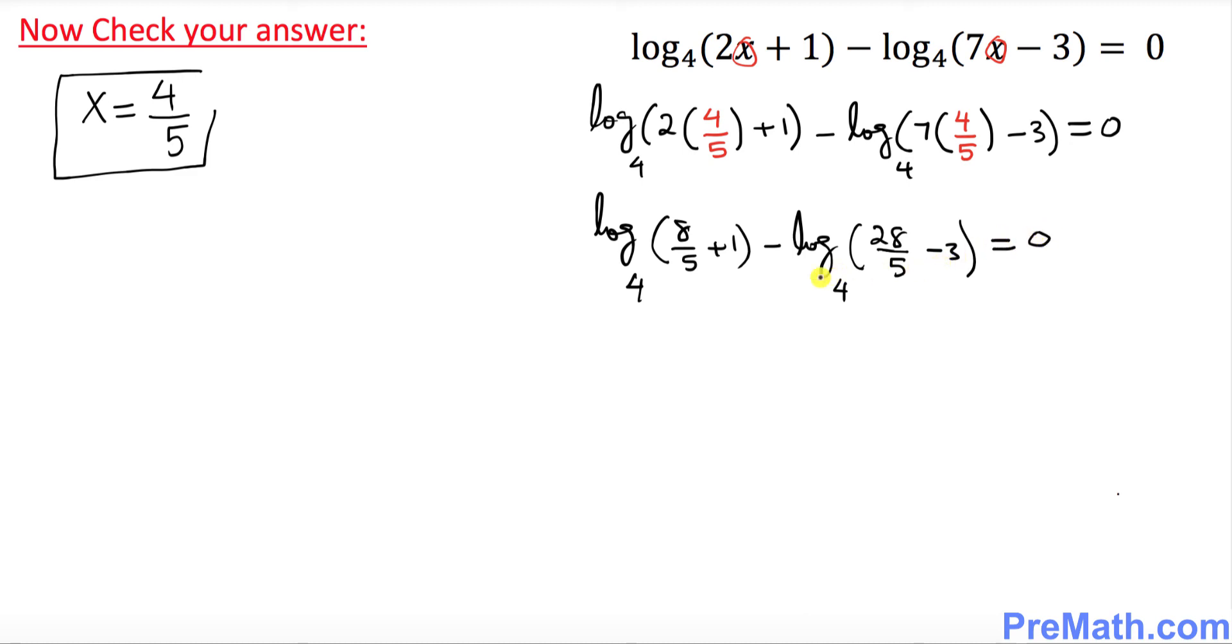We are going to see whether this statement is true. So let's go ahead and add this one. So that's going to become simply log with a base 4. 8 fifths plus 1 makes 13 over 5 on this side, minus log. So log of this one also becomes 13 over 5 with a base 4, equal to 0.